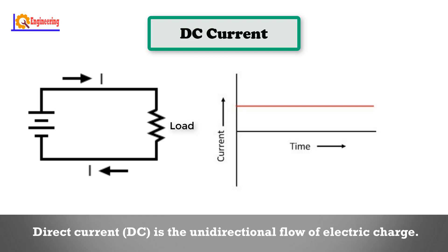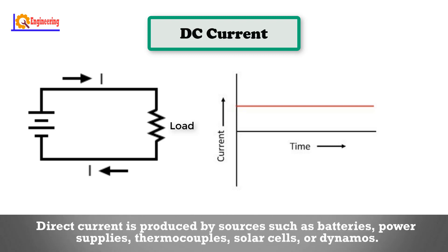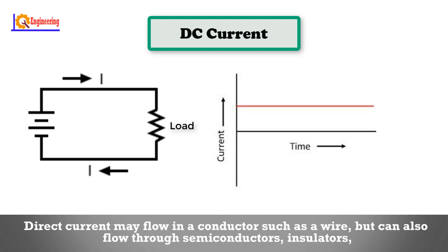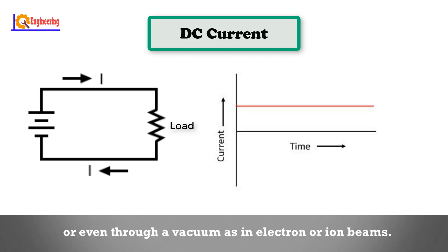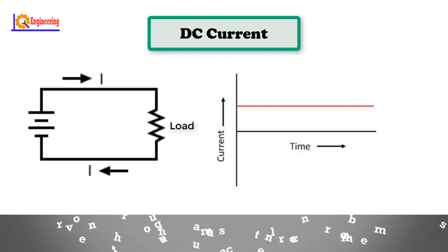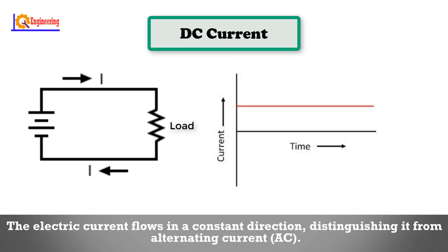Direct current (DC) is the unidirectional flow of electric charge. Direct current is produced by sources such as batteries, power supplies, thermocouples, solar cells, or dynamos. Direct current may flow in a conductor such as a wire, but can also flow through semiconductors, insulators, or even through a vacuum as electron or ion beams.